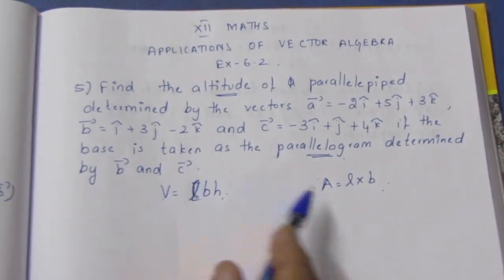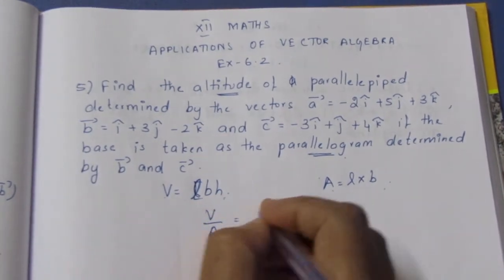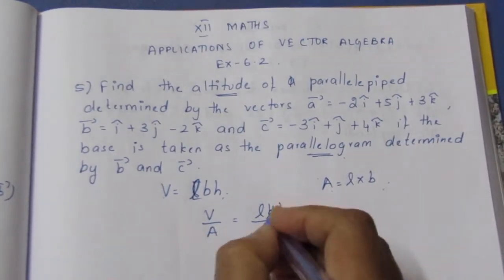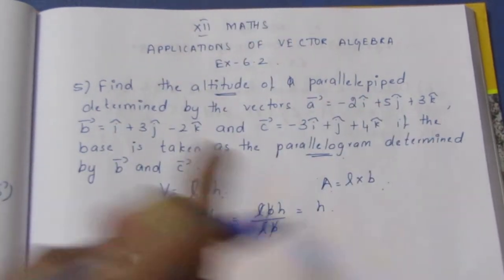This is the method to follow for this sum. H is the height or altitude. We'll find the volume and area, then divide them to easily get the altitude.